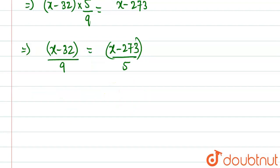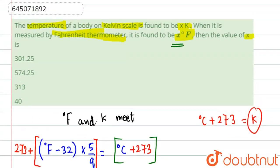So on calculating, what we'll get, we'll get the value of X as X will be equal to 574.25. So our answer will be 574.25. So our answer will be option number B, which is absolutely correct. And absolutely our answer 574.25.